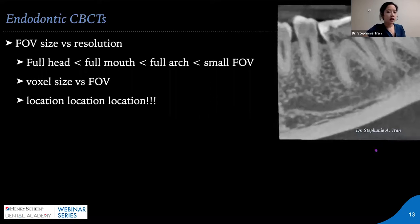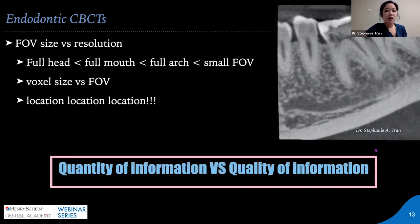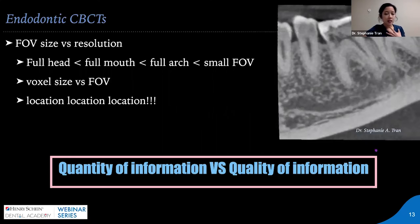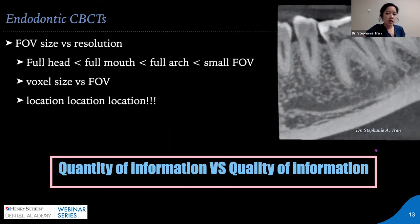With a smaller field of view, we have higher quality information rather than a large quantity. One benefit is that there's less to interpret. As providers, we're responsible for interpretation of everything within the scan. If you have a large field of view, you have to look at everything including all vital structures, which is why large surgery-type or full-arch CTs are often sent out to radiology to interpret. A small field of view is the equivalent of about two or three periapical radiographs, so it's a lot easier to interpret and gives you a highly focused view of the tooth.